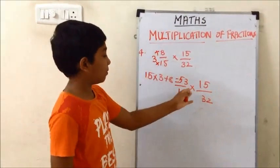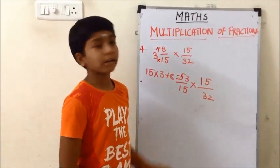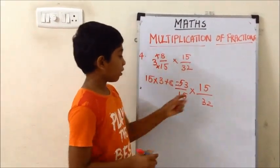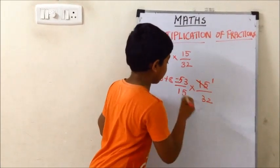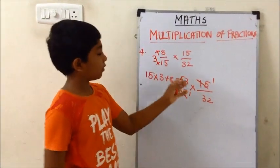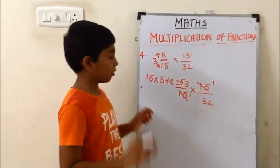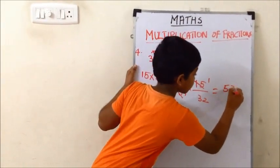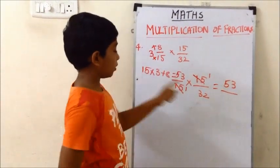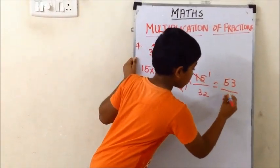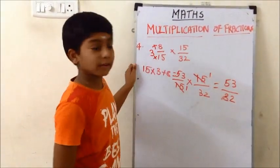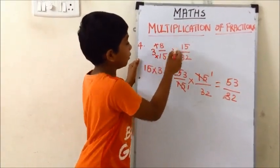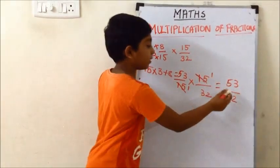Now we put the multiplication symbol. Before multiplying we check if we can cut short. Yes, we can. 15 and 15 — 15 comes in the first time in the 15 times table. For 53 and 32 there is no common factor. So 53 into 1 is 53, and 32 into 1 is 32. The answer is 53/32. So the answer for 3 8/15 into 15/32 is 53/32.